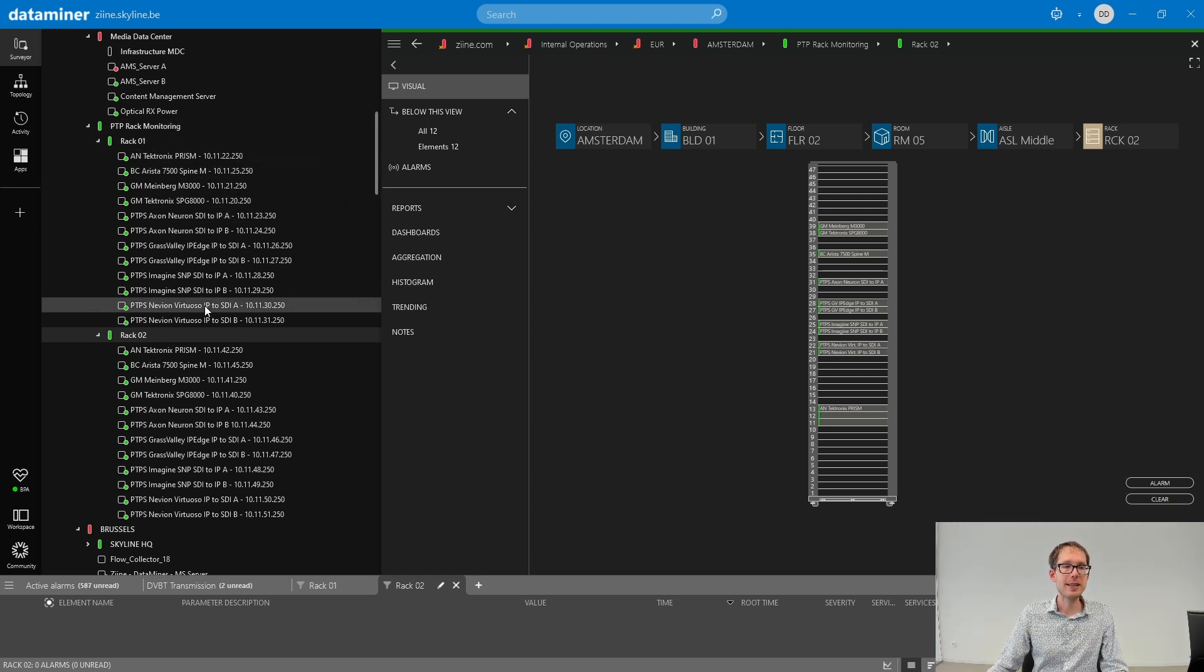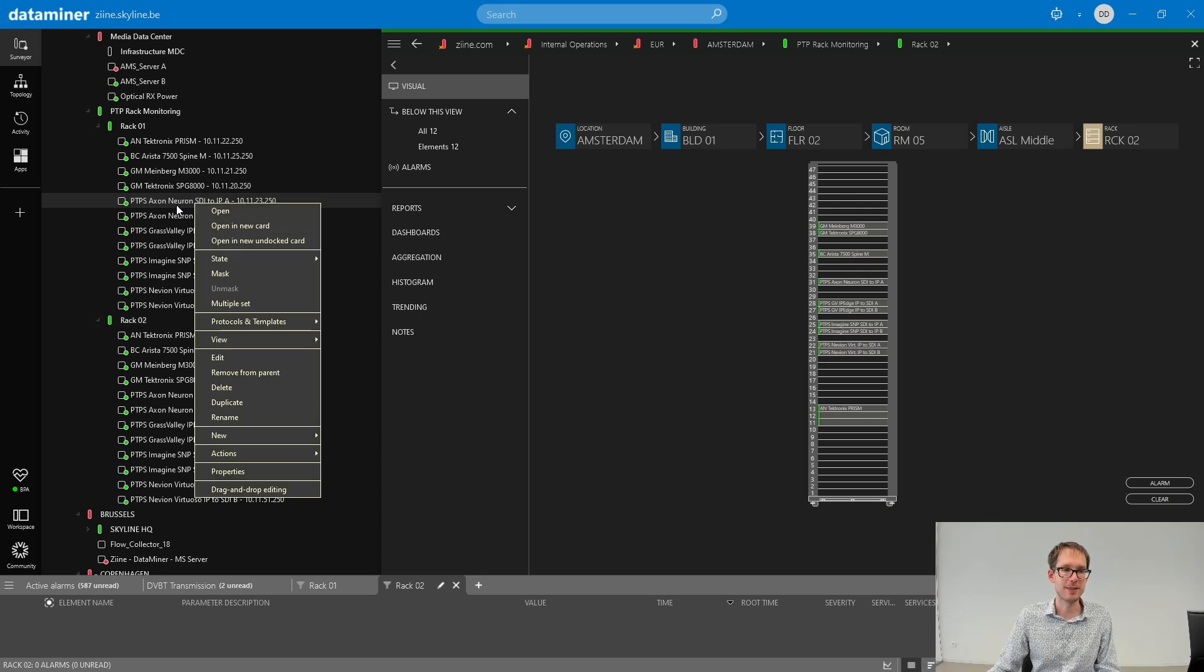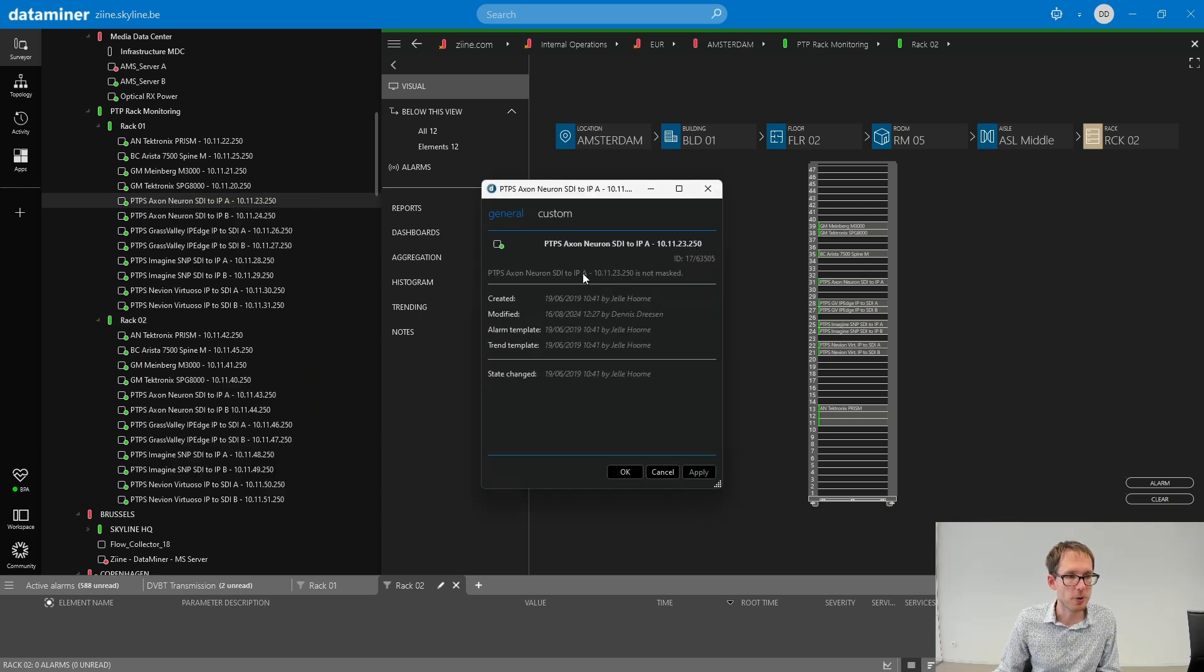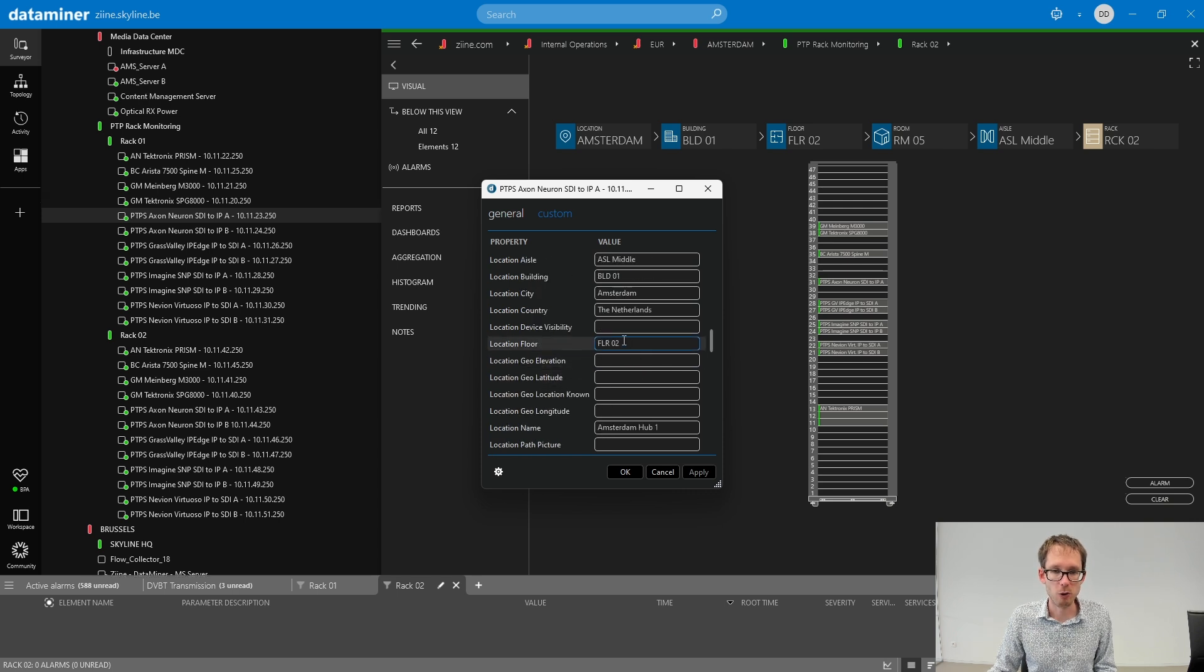Namely, in this first setup, I have configured the location of my devices. Simply go to the properties of your device. And you will see here that if I scroll down that IDP is enabled here and that the device location is specified. The device apparently is in rack one of room five on floor two of some building in Amsterdam.